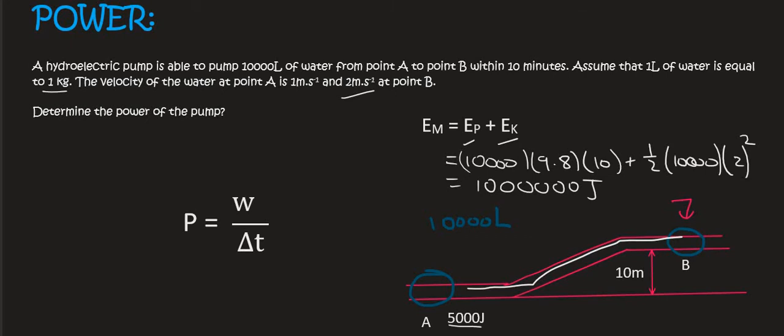Where did that extra energy come from? The pump. So the pump's energy is equal to the 1 million minus the 5,000 that it had on the ground, and so the pump has added 995,000 joules of energy.